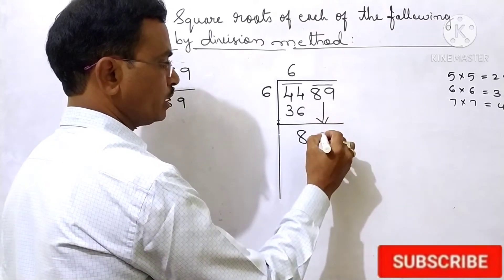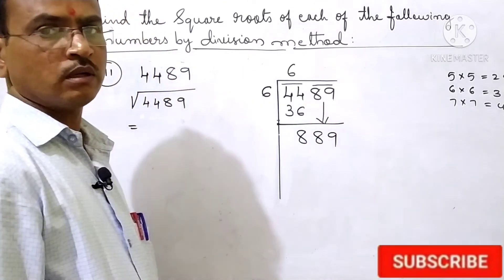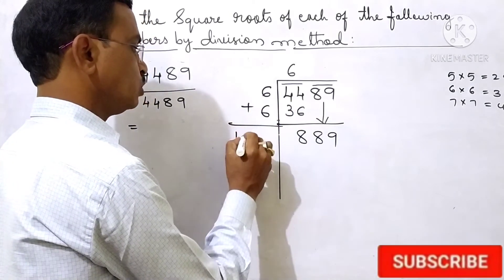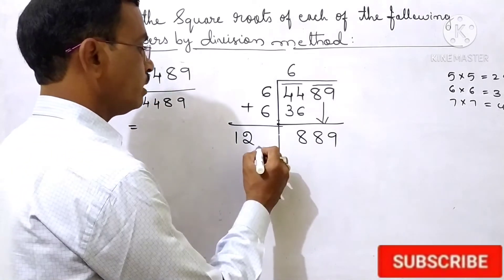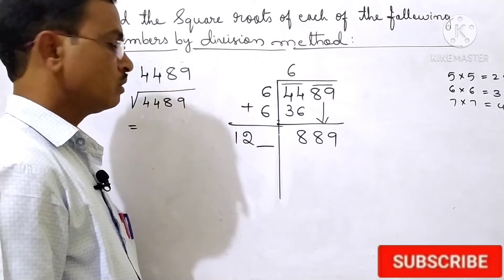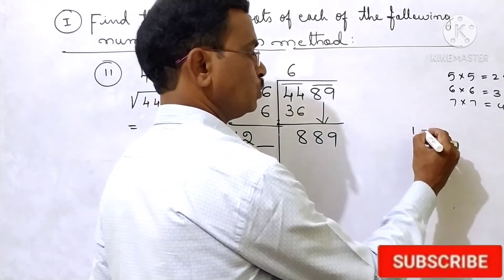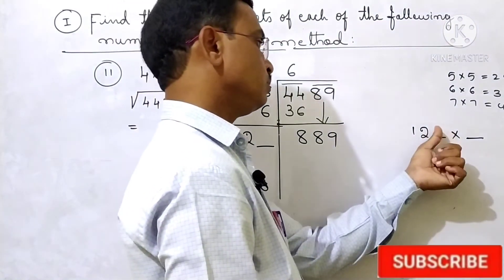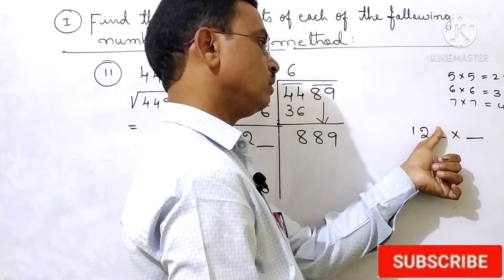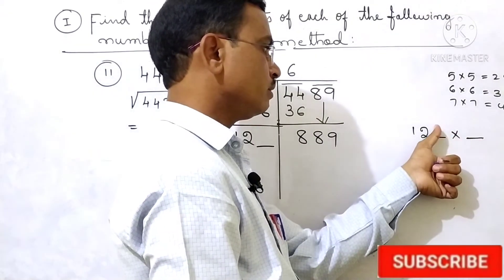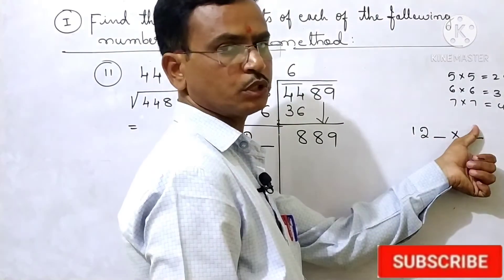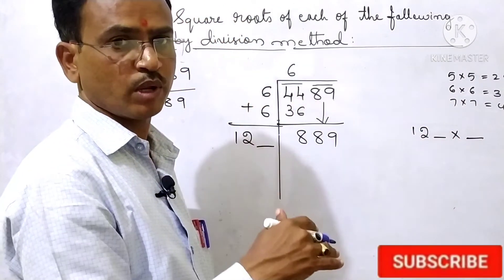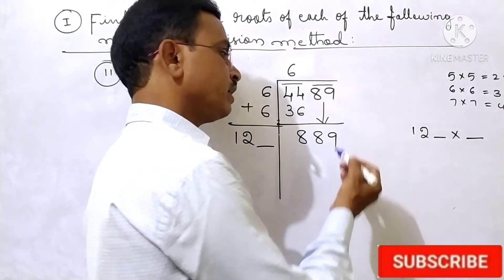Then you should take the last group 89. Then you should make 6 double: 6 plus 6 becomes 12. Now here you should put a blank line. So in the rough column, here you should take 12_ × _. Whichever number you are going to take, multiply it with that same number.